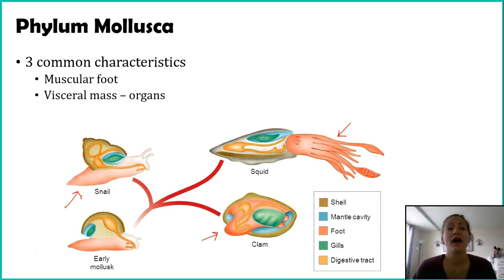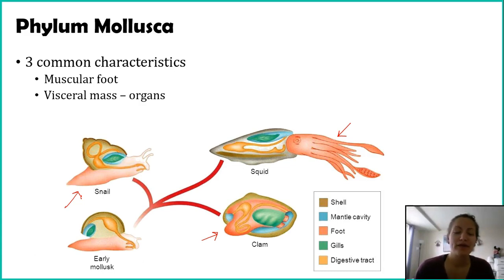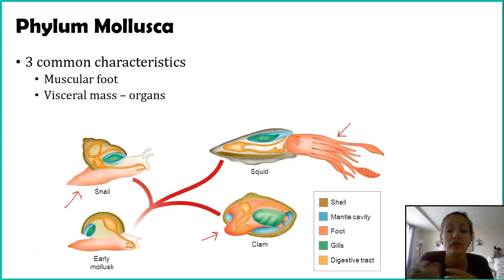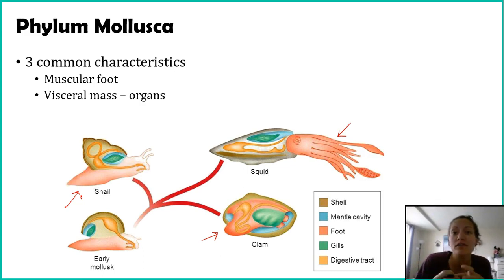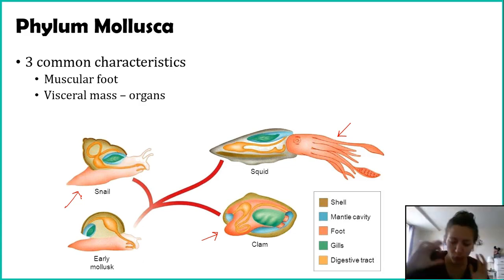All mollusks also have a structure called the visceral mass, which is where all of the organs are found. The picture here shows the gills and the digestive tract, and those would be part of the visceral mass. It's almost an enclosed region of the body where you find all the organs, including reproductive organs, things used in respiration, and things used in digestion — one central area where all of these organs are found.